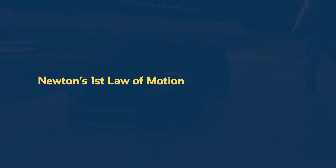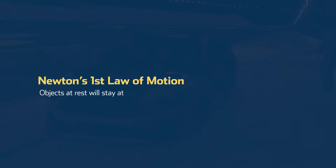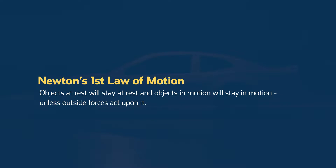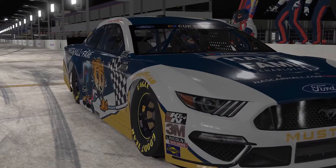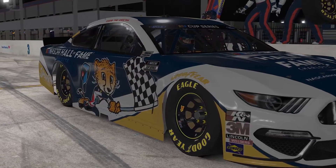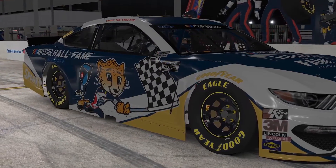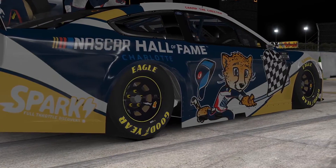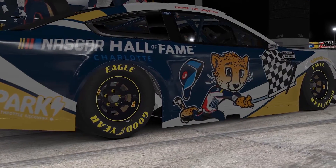The first law states objects at rest will stay at rest, and objects in motion will stay in motion, unless outside forces act upon it. Notice our car sitting on pit road with the engine shut off. It will sit at rest until the engine provides power to the rear wheels — this is the outside force Newton refers to.